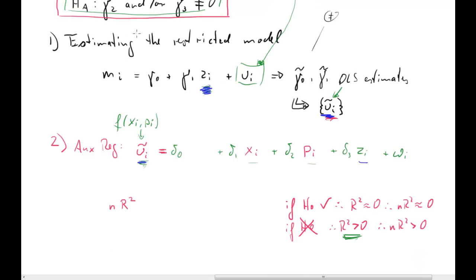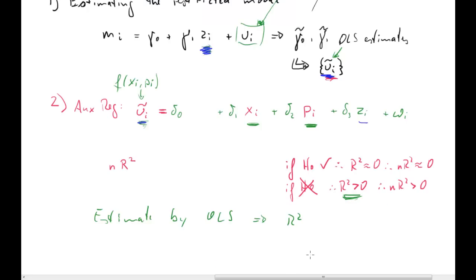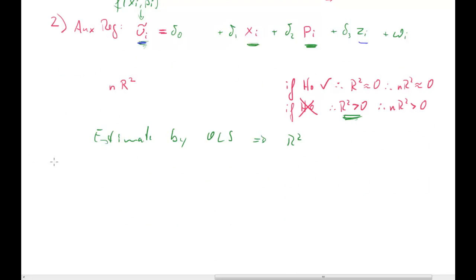The important aspect is these two explanatory variables xi and pi, because they will differentiate between the two cases. In step 2, you estimate this auxiliary regression model by OLS and obtain the R squared. Then step 3 is to simply calculate the test statistic: N times R squared, where N is the number of observations used — the same number as in your original regression.